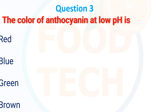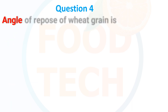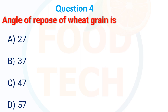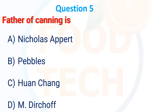The color of anthocyanin at low pH is: A) red, B) blue, C) green, D) brown. The answer is A — red. Angle of repose for wheat grain is: A) 27°, B) 37°, C) 47°, D) 57°. The answer is A — 27°.